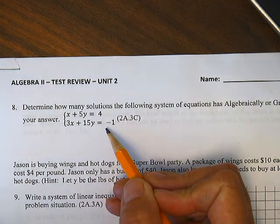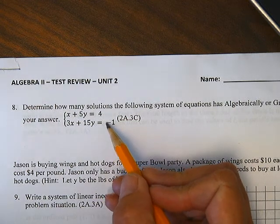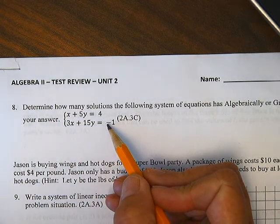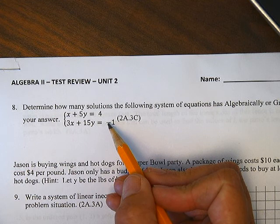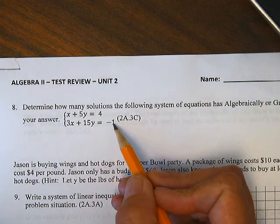Remember, there's three possible answers. We could have one solution if the lines intersect. We could have zero solutions if the lines are parallel. Or we could have infinite if the lines are the same.